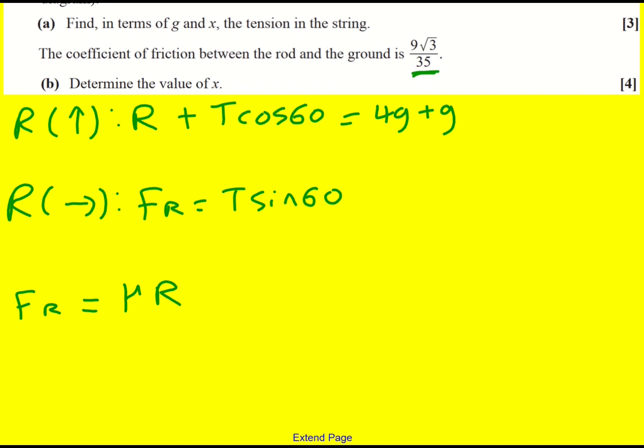And therefore I can, I'm just trying to decide how much to, so I could rearrange this. So R is equal to 5G minus T cos 60, which is actually a half T. And then this is root 3 over 2T, and then this is root 3 over 2T. So I can substitute in for both.